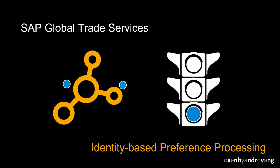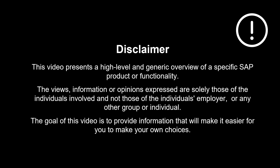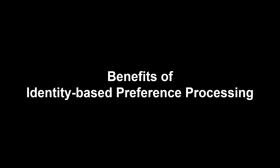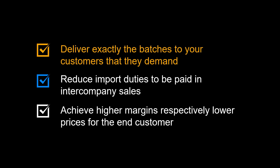The actual preference status of the product can be influenced by exchanging component batches. The views, information, or opinions expressed are solely those of the individuals involved and not those of the individual's employer or any other group or individual. Let us look at some of the benefits provided by identity-based preference processing. Since you know the preference status per batch, you can deliver exactly the batches to your customers that they demand. In intercompany sales, this leads to reduced import duties to be paid by the company. In external sales, this leads to higher margins or lower prices for the end customer.